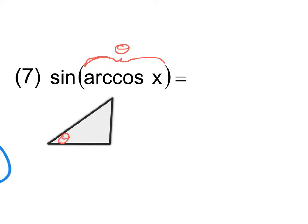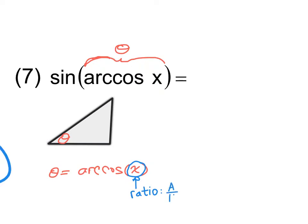Theta is represented by the arc cosine of x. Arc cosine is the arc cosine of a ratio — specifically the cosine ratio, adjacent over hypotenuse. Looking at x, you might not see a fraction, but any number is a fraction over one. So the adjacent side is x and the hypotenuse is one.